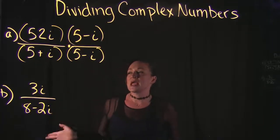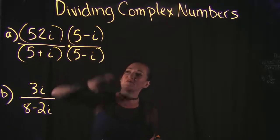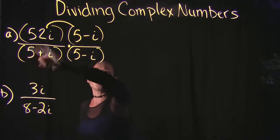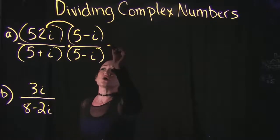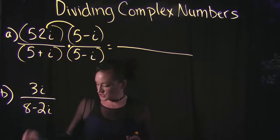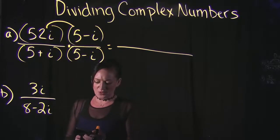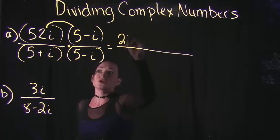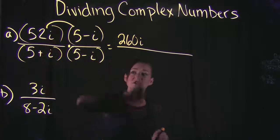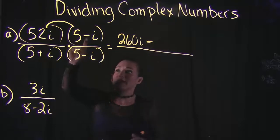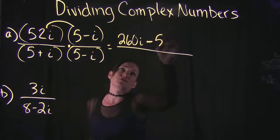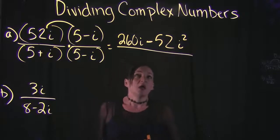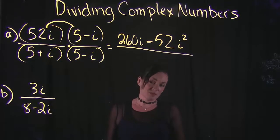In the numerator we have 52i times 5 minus i. Distributing: 52i times 5 gives us 260i, and then minus 52i times i gives us minus 52i squared. We'll multiply the denominator next before we start simplifying — we need to keep in mind the rules of i, specifically that i squared equals negative 1, which we'll get to in just a second.